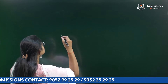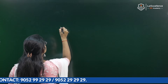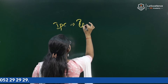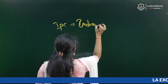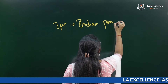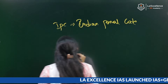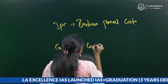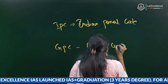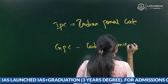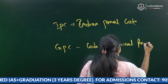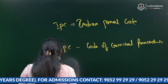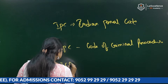Historically, we have three criminal laws in India. The first one is IPC, which is the Indian Penal Code. The second one is CrPC, the Code of Criminal Procedure. The third one is the Indian Evidence Act, also called IEA.